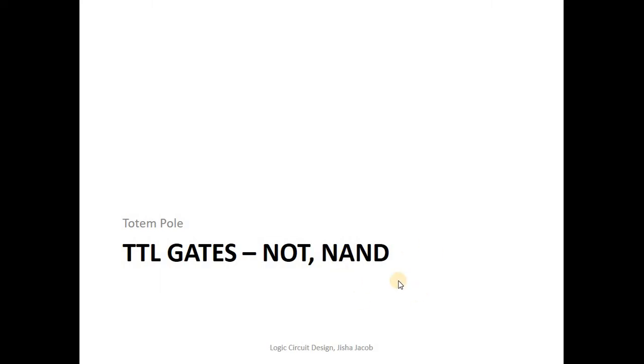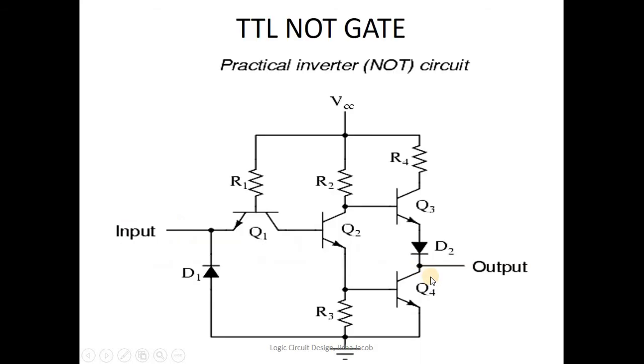Hello, let us study TTL gates today. The first gate is the TTL NOT gate. This is the circuit for the TTL NOT gate. A TTL NOT gate performs the operation of inversion: if the input is zero, the output is one, and if the input is one, the output is zero.